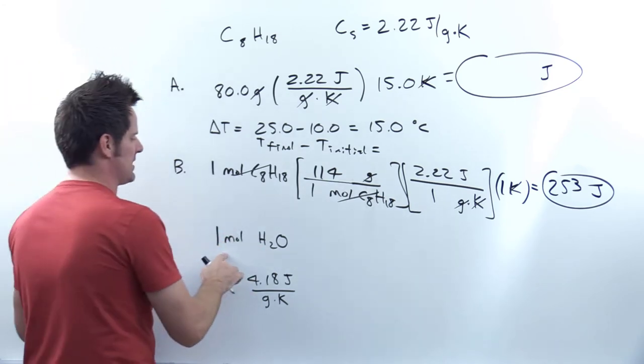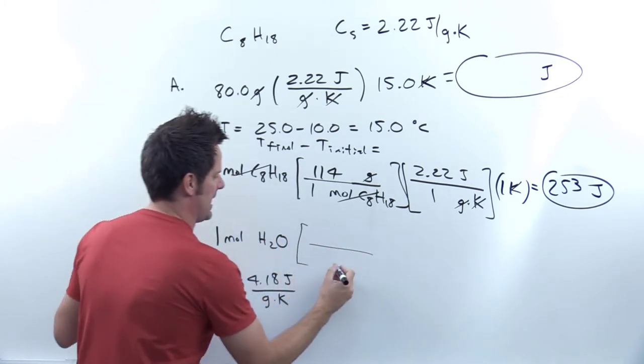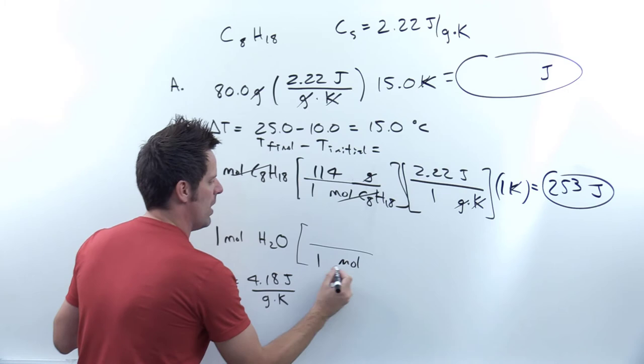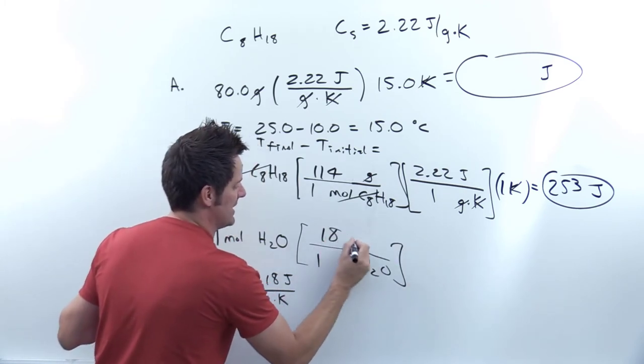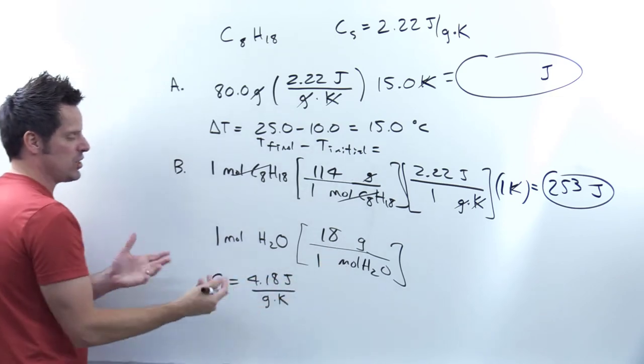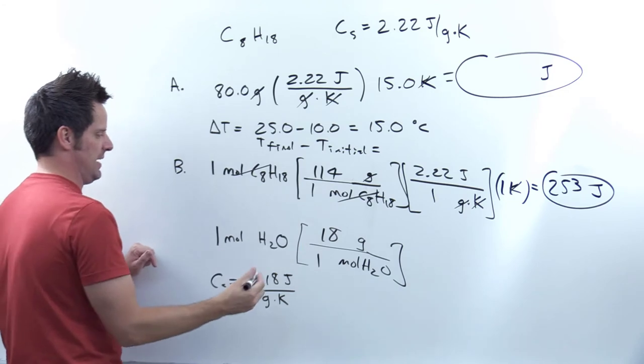So now I'm going to do the analogous thing for water. Now, in order to do the analogous thing for water, I need to multiply it by its molecular weight. So one mole of H2O happens to weigh 18 grams, because each hydrogen weighs 1, and there are 2 hydrogens, and each oxygen weighs 16. So 16 plus 1 plus 1 is 18.